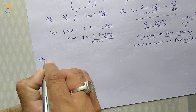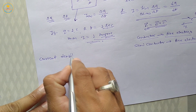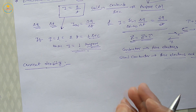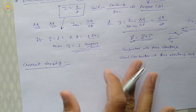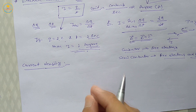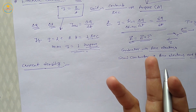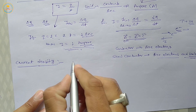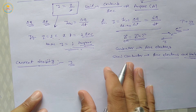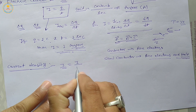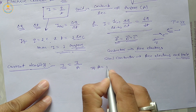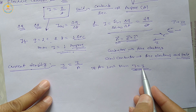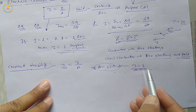Our next topic is current density. Simple density is the amount of mass per unit volume. Similarly, current density is the amount of current flowing through the unit cross-sectional area. So we can say the current flowing through the unit cross-sectional area of a conductor is called current density. It is represented by J, and J equals I upon A.